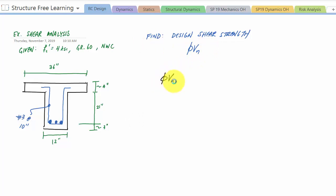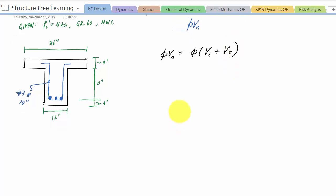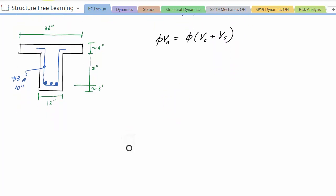We'll be able to calculate the design shear strength here. So the first thing, if we attack the concrete using ACI code equation 22.5.5.1, that is Vc equals 2 lambda square root fc prime bwd.